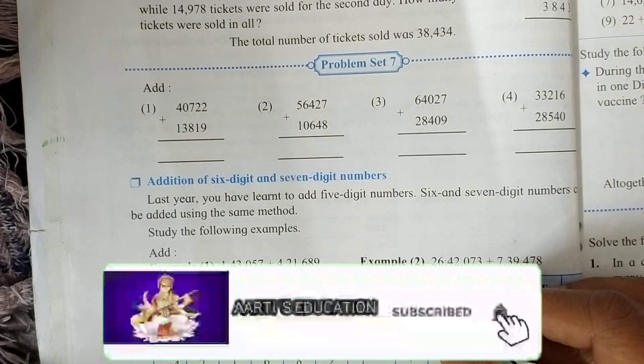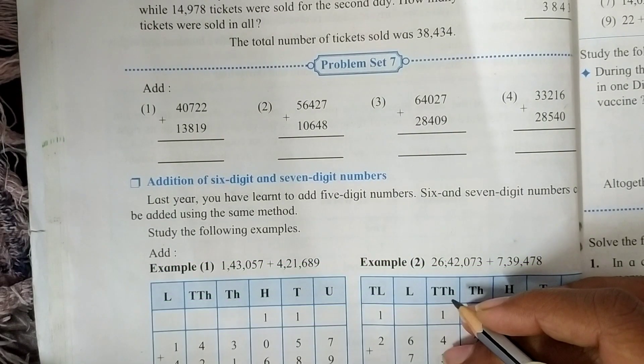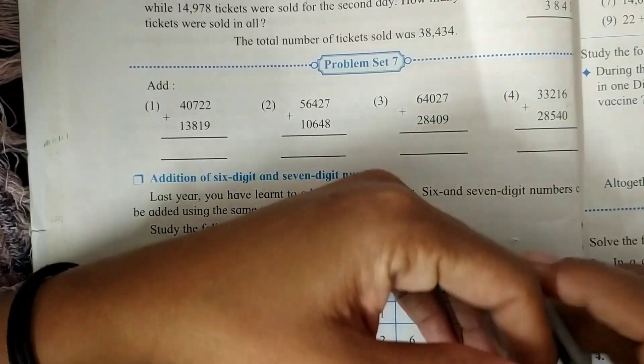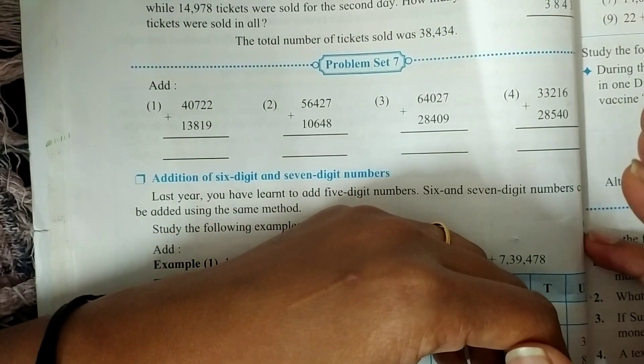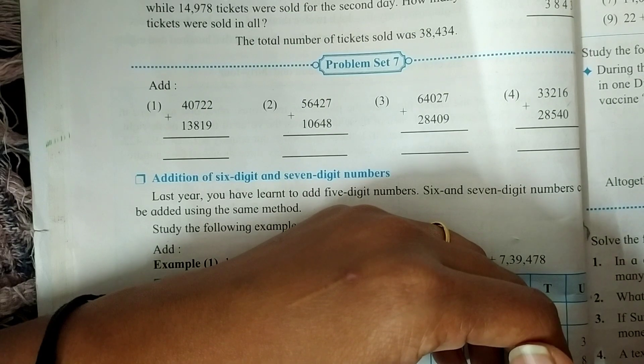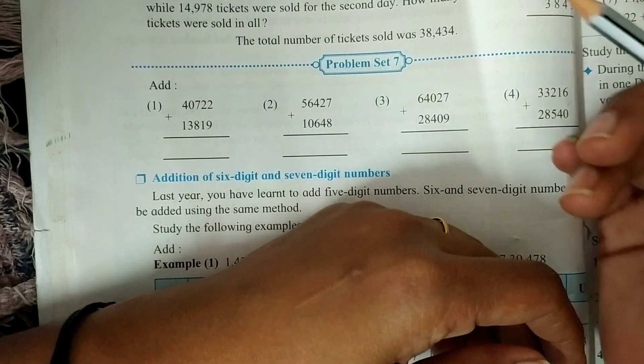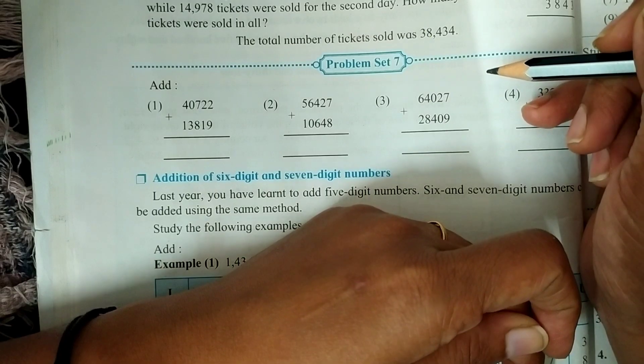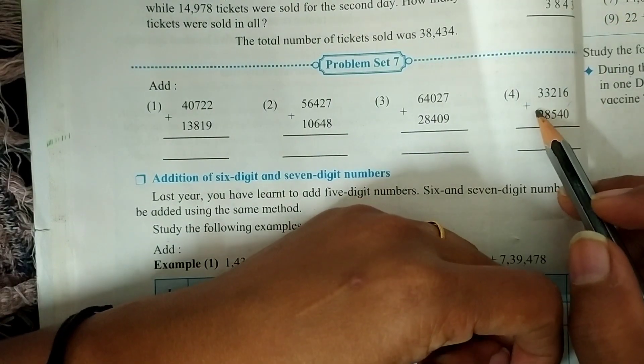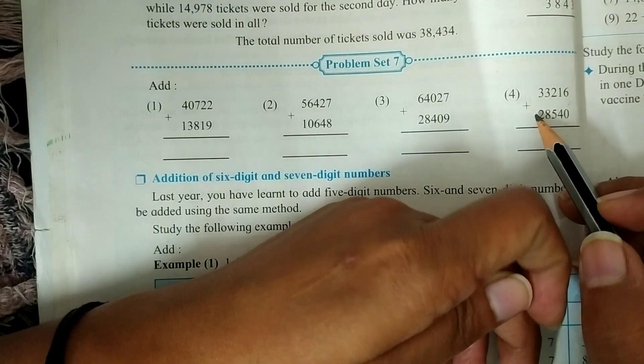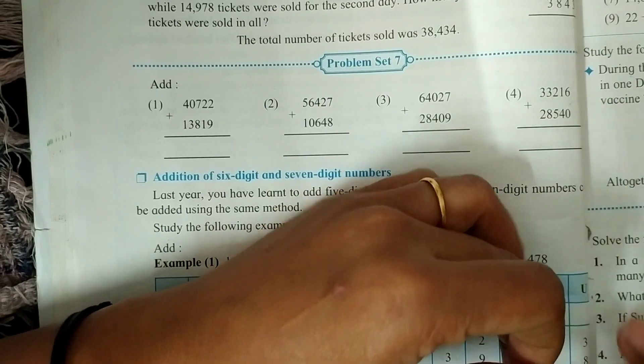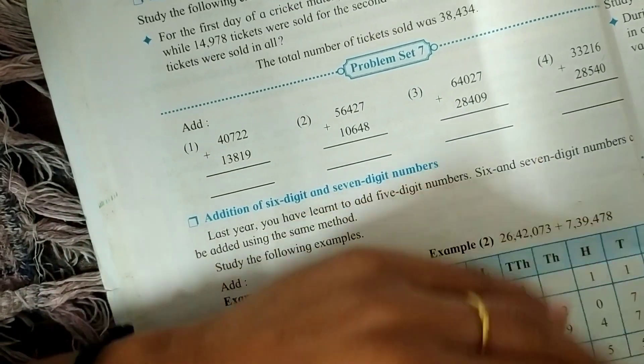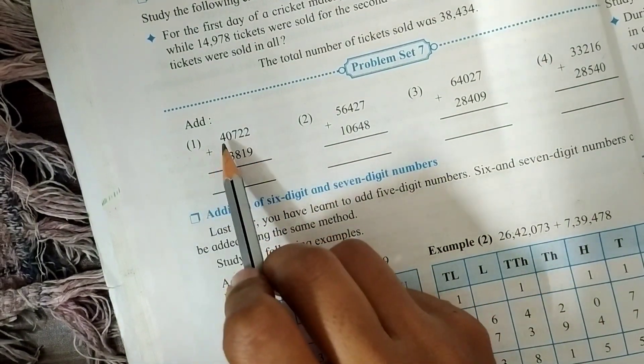Welcome to my channel. Today we are going to learn how to solve Problem Set 7. Last year you have learned to add five-digit numbers. Here is a revision for that. In Problem Set 7 there are four questions of additions. We have to add the given questions, so let's start to add numbers. The first question is...